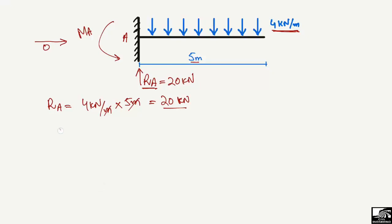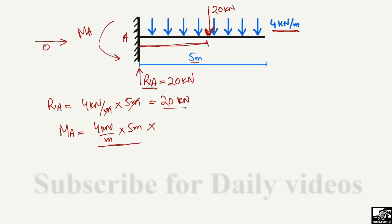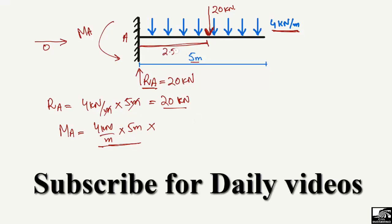Now to find the moment at A: the force is 4 kilonewton per meter multiplied by 5 meters, which gives 20 kilonewton. We convert the uniformly distributed load into a point load of 20 kilonewton acting at the midpoint of the beam. The distance from point A to this equivalent point load is 5 divided by 2, which equals 2.5 meters. So the moment arm is 2.5 meters.